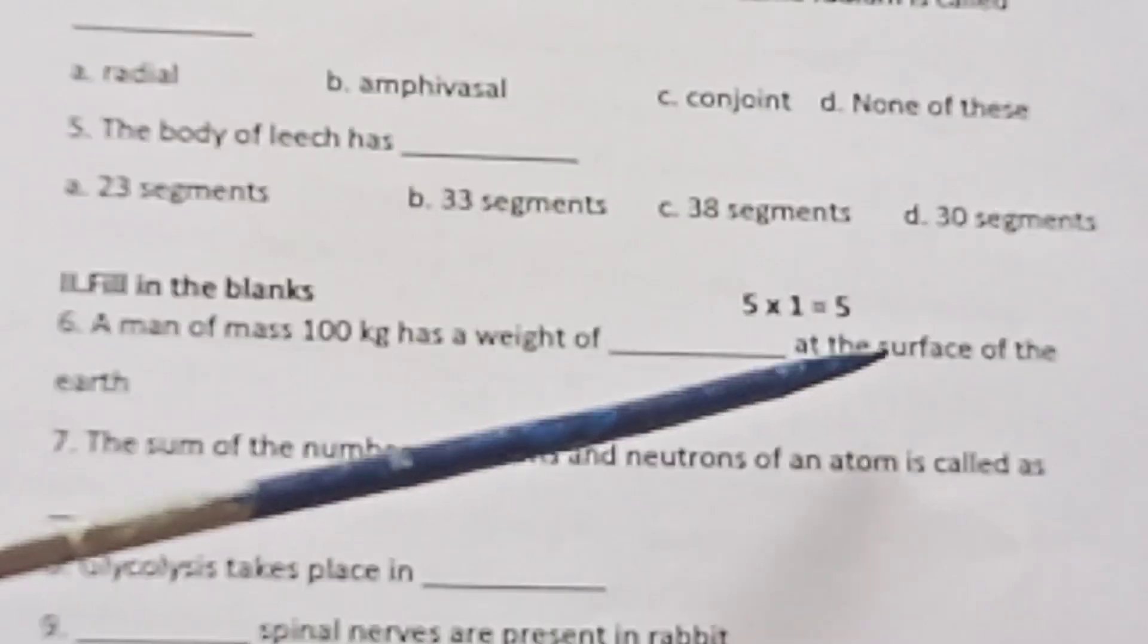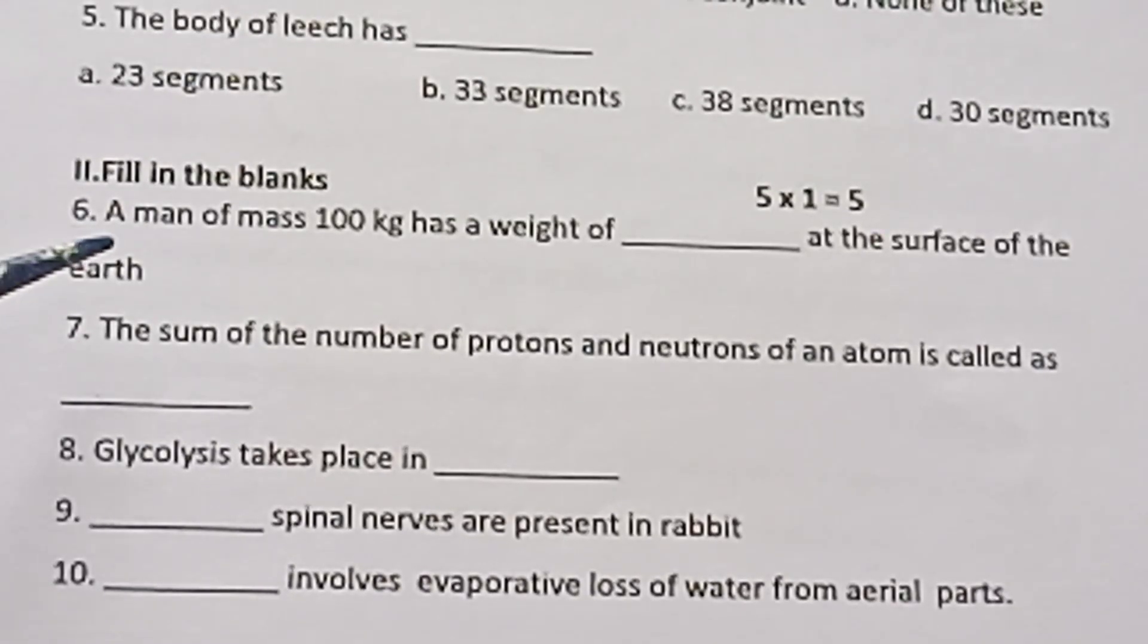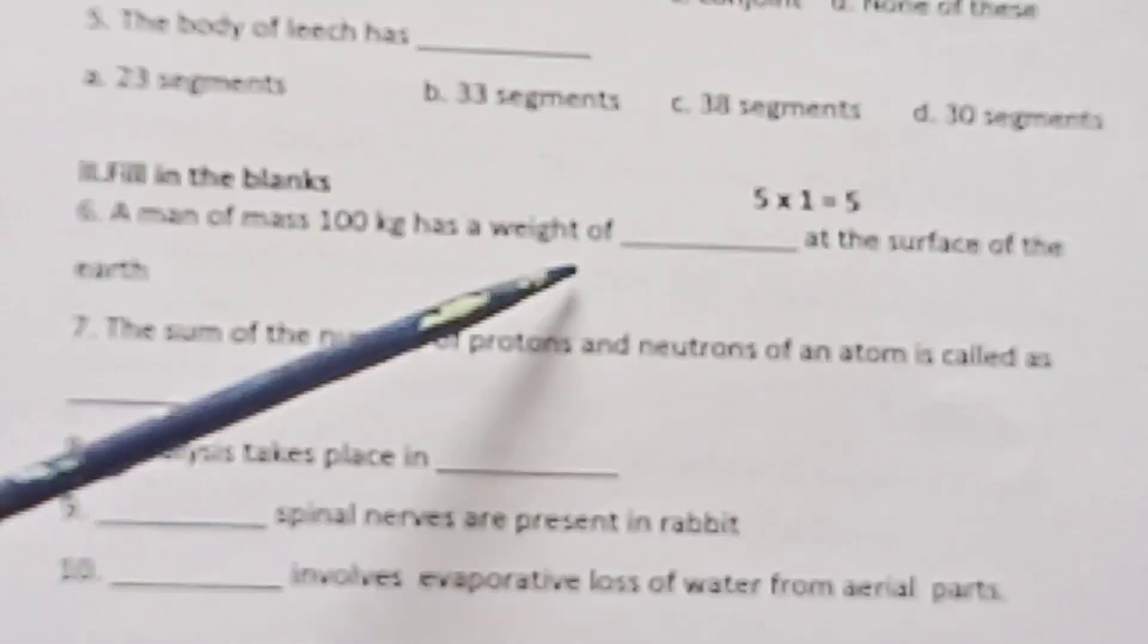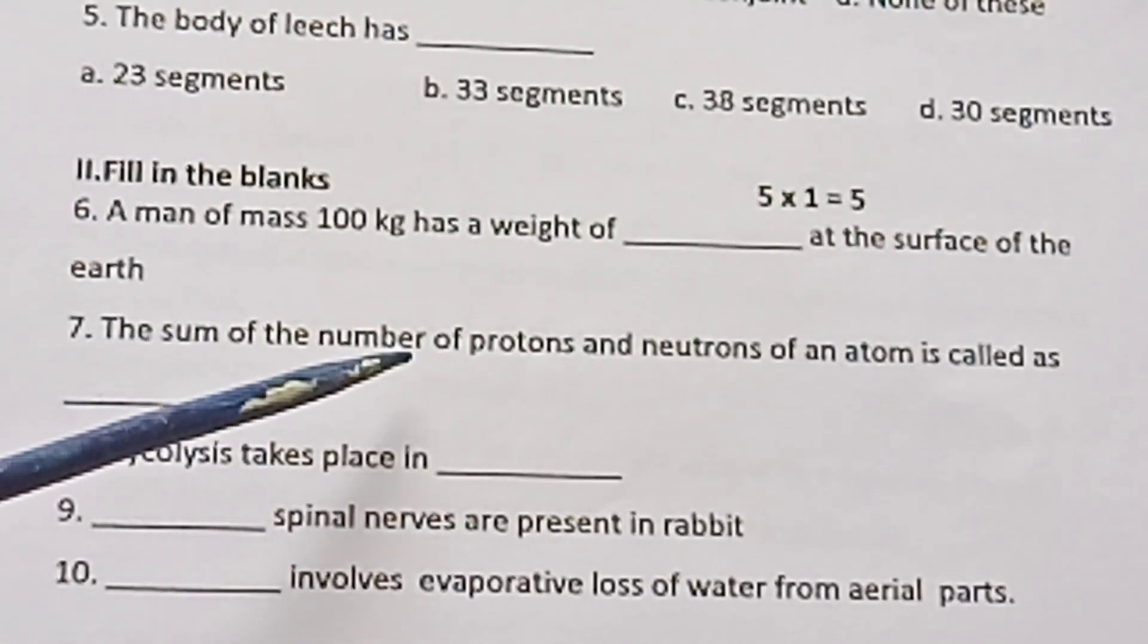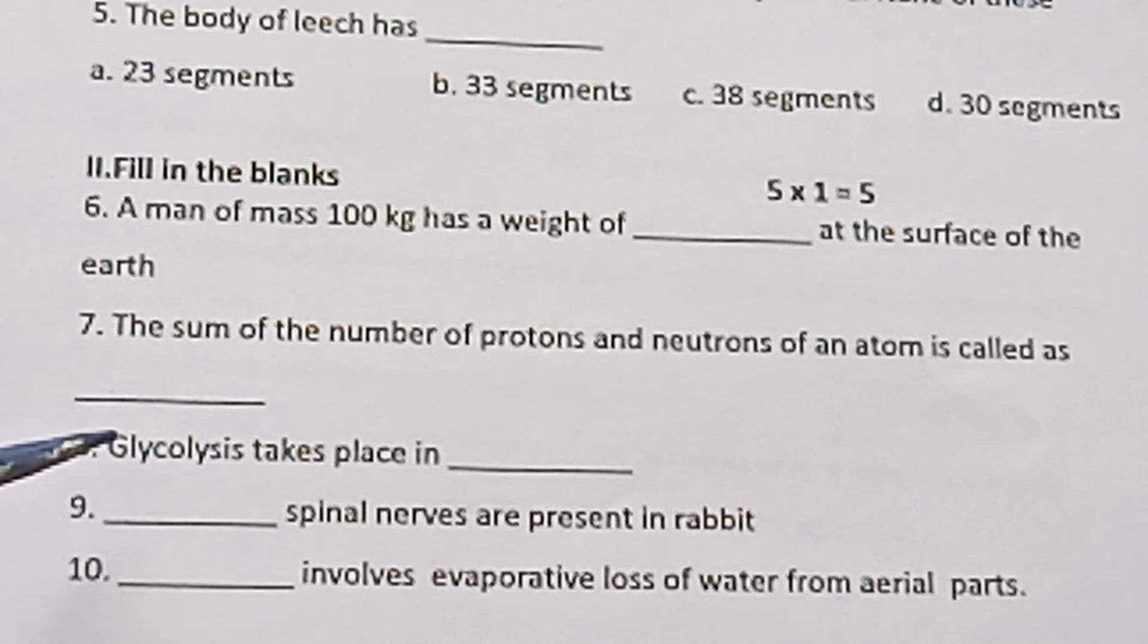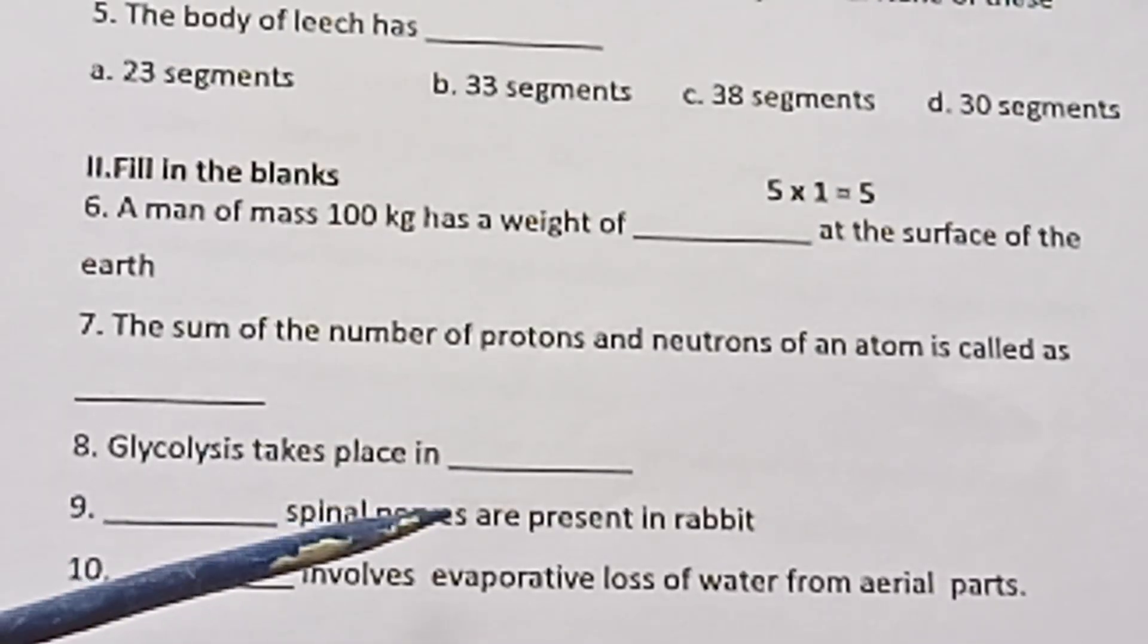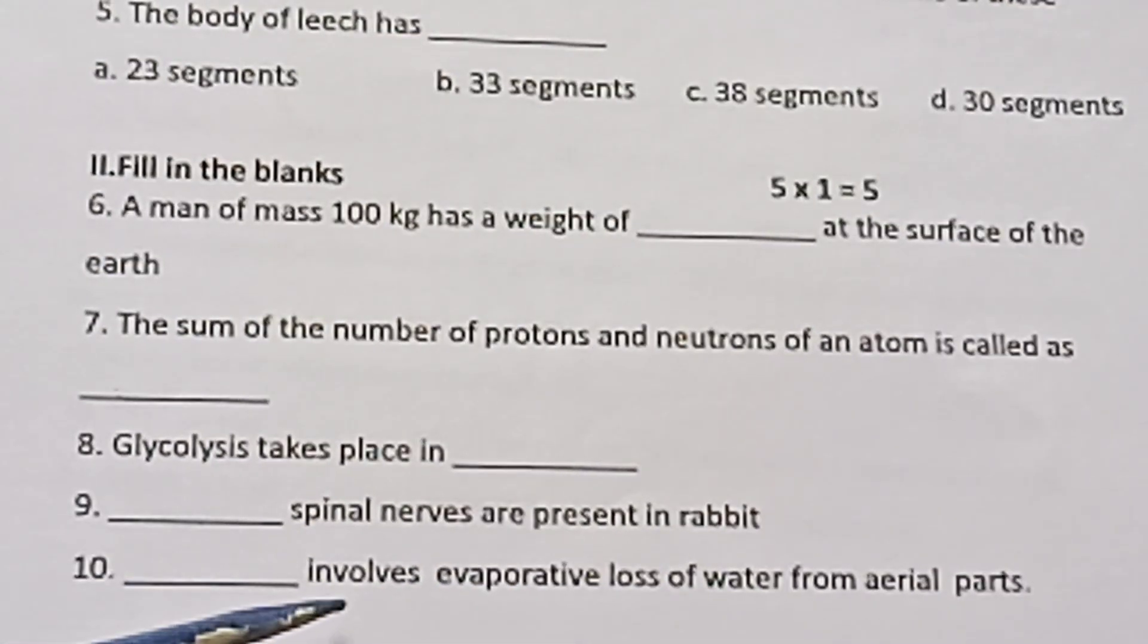Room letter 2. Fill in the blanks. 5 into 1 is equal to 5. Sixth one. A man of mass 100 kg has a weight of dash at the surface of earth. Seventh one. The sum of the number of protons and neutrons of an atom is called as dash. Eighth one. Glycolysis takes place in dash. Ninth one. Dash cranial nerves are present in rabbit. Tenth one. Dash involves evaporative loss of water from aerial parts.